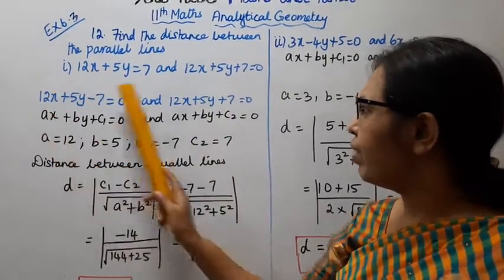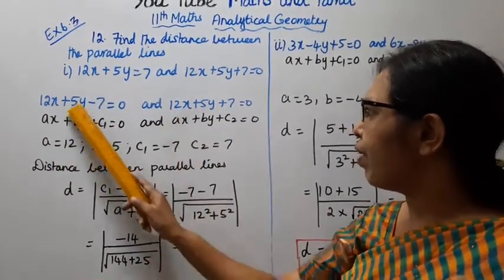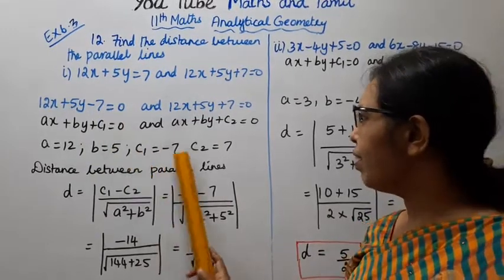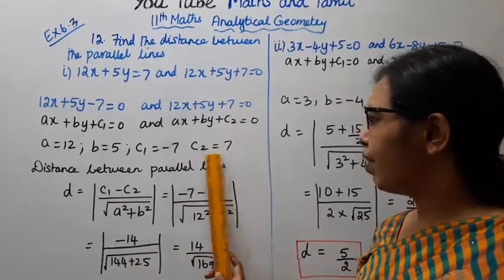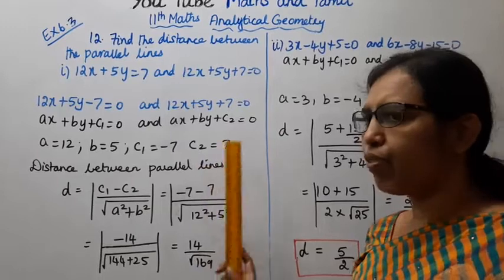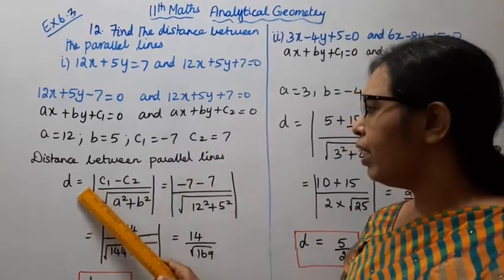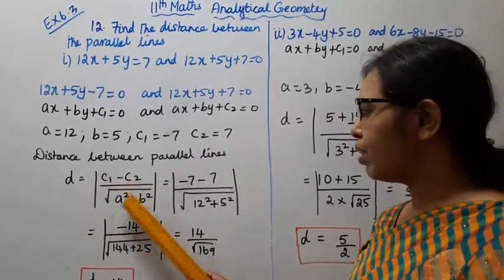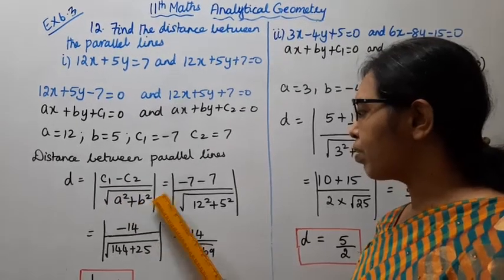A is 12, B is 5, C1 is minus 7, C2 is 7. Distance between parallel lines formula: D equal to mod of C1 minus C2 by root of A square plus B square.